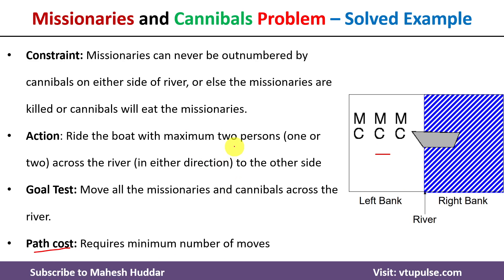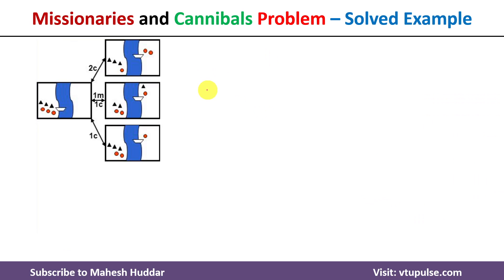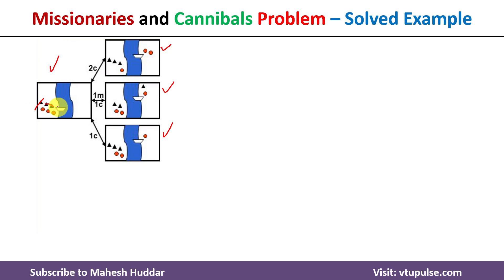Now we will understand how to solve the missionaries and cannibals problem with the given constraints. This is the initial state where three missionaries and three cannibals are on one side of the river along with the boat. The possible moves are: move two cannibals to the other side, move one missionary and one cannibal, or move one cannibal. We cannot move two missionaries, because that would leave one missionary and three cannibals on the left side, and the missionaries would be killed.